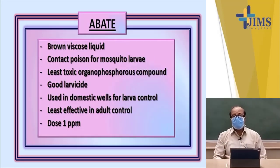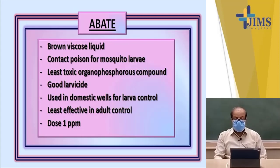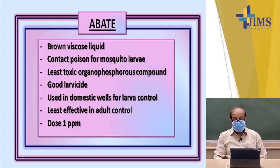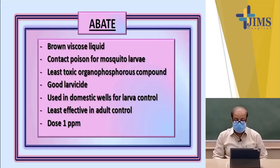Abate is also an organophosphorus compound, basically known as temephos. It is a brown viscous liquid and is a contact poison for mosquito larvae. Abate is to be sprinkled into water, where it kills mosquito larvae — it does not kill adult mosquitoes. It is also least toxic and a very good larvicide, and can be used in domestic water containers to kill larvae. The dose is generally 1 ppm.